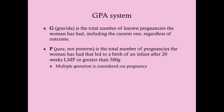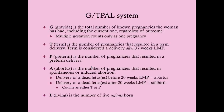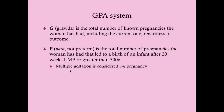The older GPA system uses G the same way — total known pregnancies including current, regardless of outcome. However, P in the GPA system stands for para, which is the total number of pregnancies that led to a birth after 20 weeks LMP or greater than 500 grams. This is essentially a combination of T and P from the GTPAL system. A stands for abortus, same definition as before.